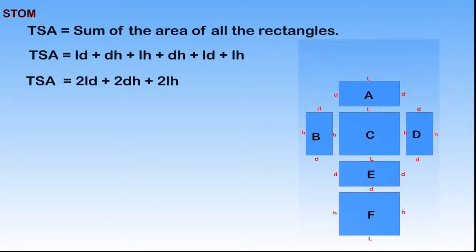When simplified further, we have 2LD plus 2DH plus 2LH. This can also be written as 2 into brackets: LD plus DH plus LH.